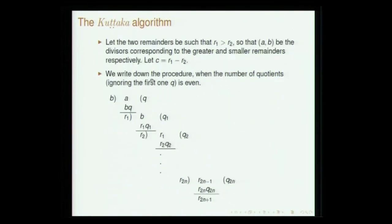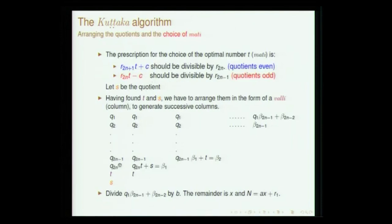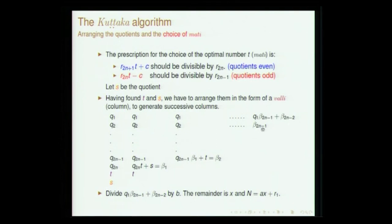The arrangement is: q1, q2, q_{n-1}, q_n, then t is mati, then the quotient s below. Now what is to be done? Having created this valli, you multiply qn by t plus s — call this beta1. Then in the next stage: q_{n-1} times beta1, plus t. The algorithm continues until you reach only two numbers and there is nothing more to add.